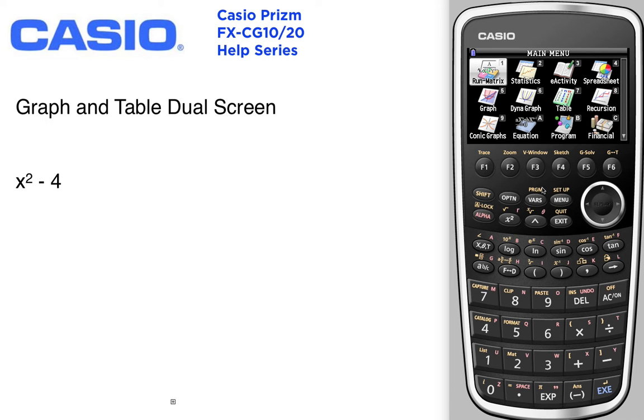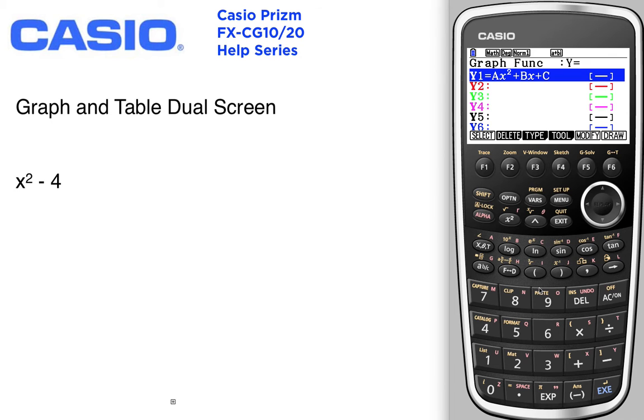I would like to create a graph and a table in a dual screen. I'm going to go into graph menu and type in my new equation x squared minus 4. Press execute.